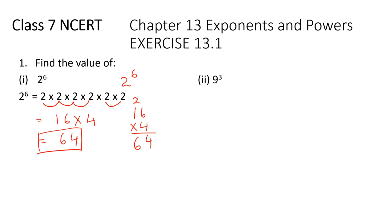So what you have to do is just take the base and see what is the exponent — multiply it that many times and simplify it, and that will be your answer. Next one is 9 raised to the power of 3. So 9 raised to the power of 3 means 9 is multiplied 3 times: 9 into 9 into 9.